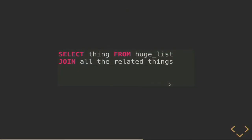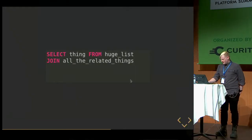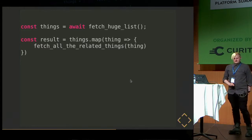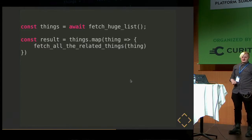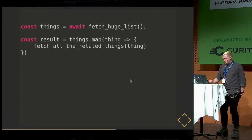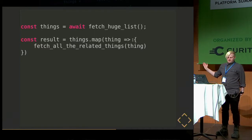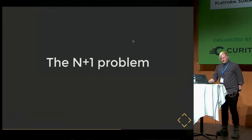Now I'd like to look at a more concrete example. If you have a SQL statement that fetches a huge list of things and then for each one of those things it tries to fetch all the related things — if you design your API like that, you're pretty much guaranteed to have bad performance. This is called the N+1 problem.